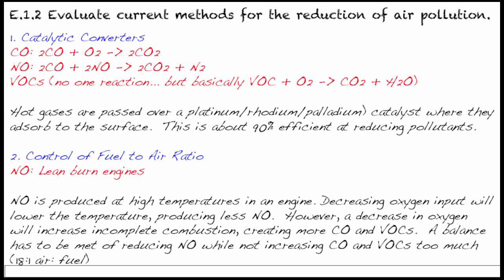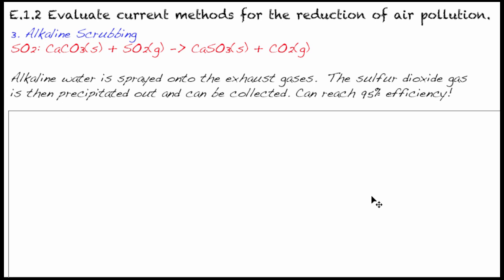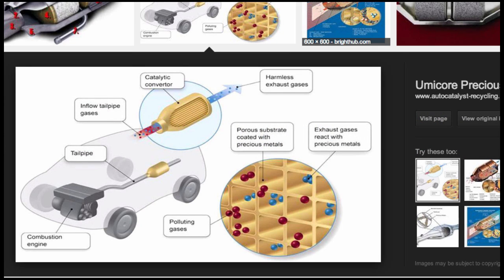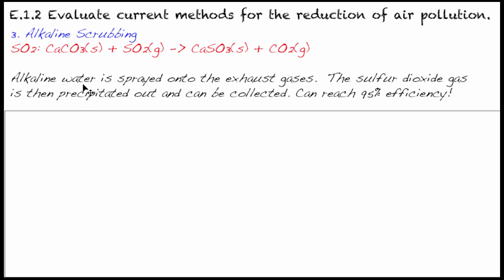Now we're going to switch to our second page here and talk about some ways related more to sulfur. Sulfur dioxide, we want to reduce that so that it can't produce acid rain. So what we have is something called alkaline scrubbing. What it basically is, is spraying a certain alkaline water with alkaline properties. Alkaline water is sprayed onto the exhaust gases, and then the sulfur dioxide gas is precipitated out and can be collected. That can be 95% efficient.